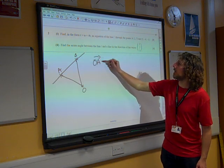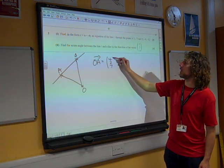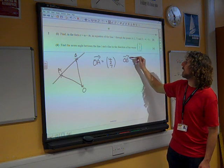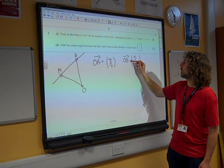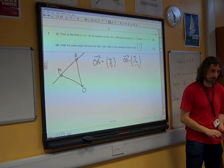Let's let OA be 427 and OB is 5 minus 4 minus 1. So, we've set these up as vectors to start with.